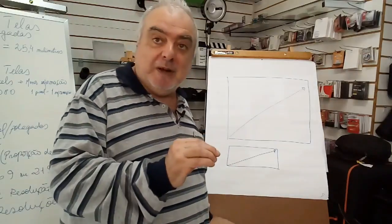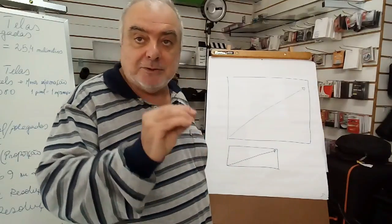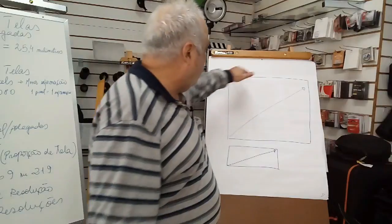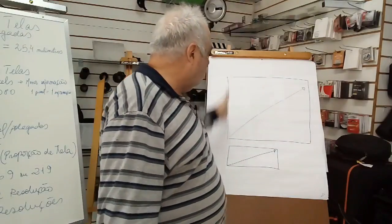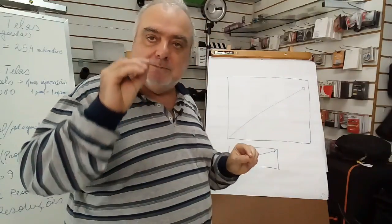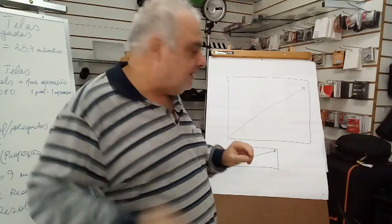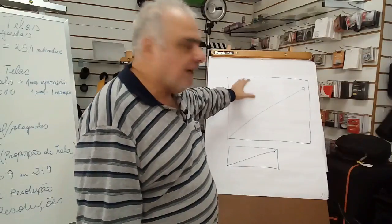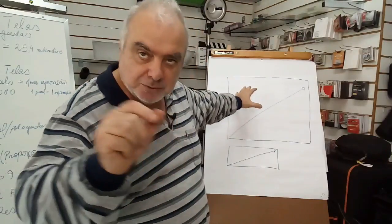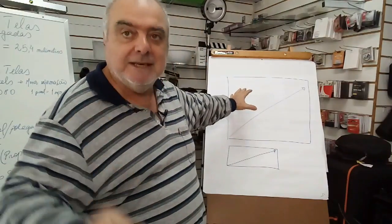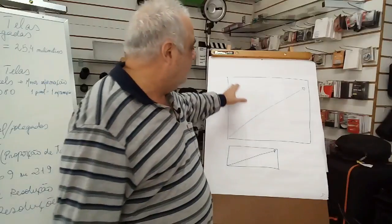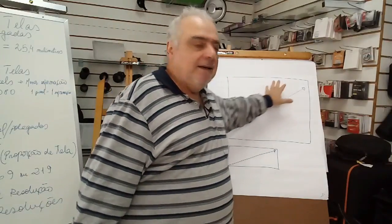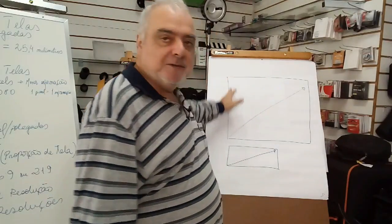Se ela fosse quadrada, seria 4.4 — 4 por 4. 4 aqui, 4 aqui. Mas a 4.3 é uma proporção parecida com essa. Aqui não está feito na medida, é só para exemplificar. Eu tenho quatro partes aqui e eu tenho três partes aqui.